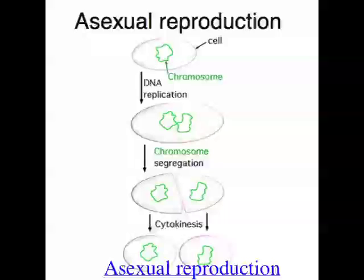There's also spore formation, and that happens in fungi. Some fungi will shoot these spores off into the air, and if a spore lands in a good environment, then that spore will start growing and form a whole new fungus. But again, it will be a clone of the original fungus, therefore making it asexual reproduction.